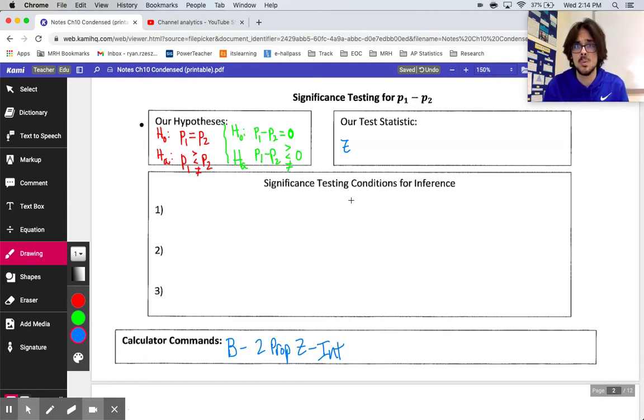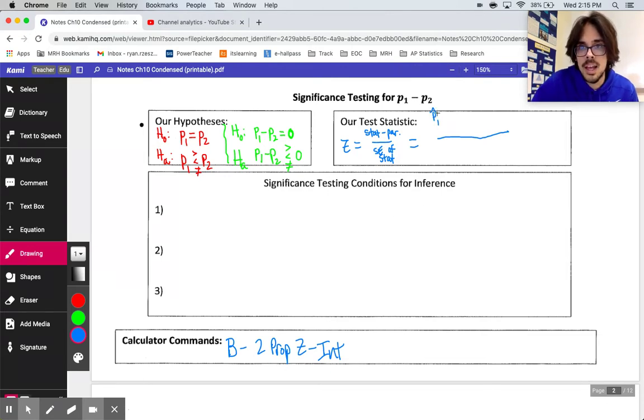We need to find a test statistic for this problem, which would be where we mark our normal curve and find our area for the P-value. It still is going to be a Z test statistic. Test statistics go: you take your statistic that you get minus your parameter, and you divide by your standard error of the statistic. If we look at this problem and think about what's going on with the difference in proportions, our statistic is that P1 hat minus P2 hat, my first sample percentage minus my second sample percentage.